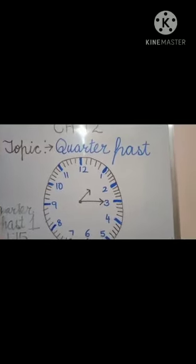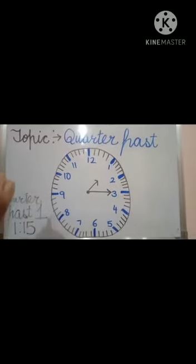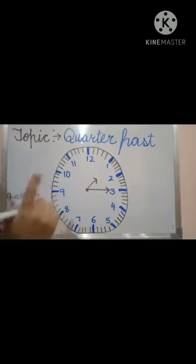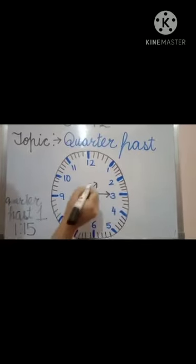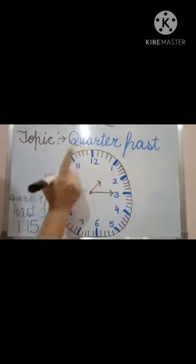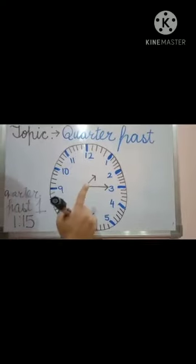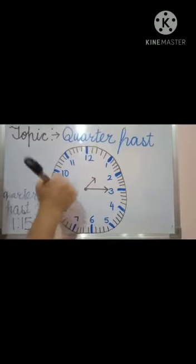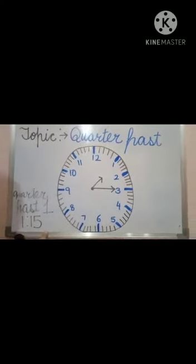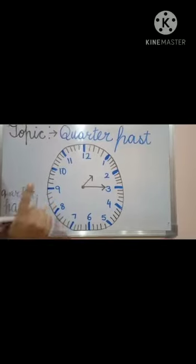In quarter past, when the short hand is between two numbers, always write the first number, draw a colon, and write the minutes shown.